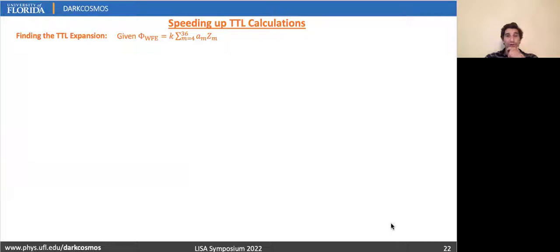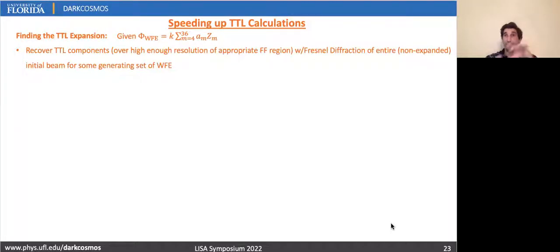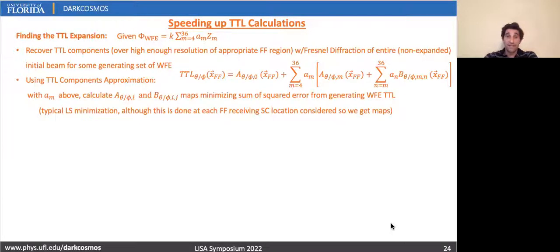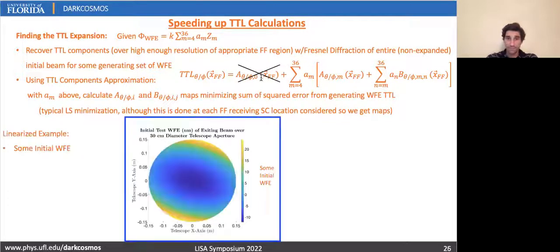And how we do that: we have our wavefront error as shown. We then propagate out some generating set of wavefront errors and get the tilt length components using Fresnel diffraction for this generating set. And then writing out our tilt length polynomial expansion, shown here for a second order expansion, we then find these A and B maps that minimize the sum of the squared errors from the actual tilt length coefficients. In other words, your typical least squares minimization scheme. And although this is done at each point in the far field, these are actually mapped over a 50 nanoradian cone. And as we saw in the no wavefront error case, there's no zeroth order term here, so this guy should go to zero and is ignorable.